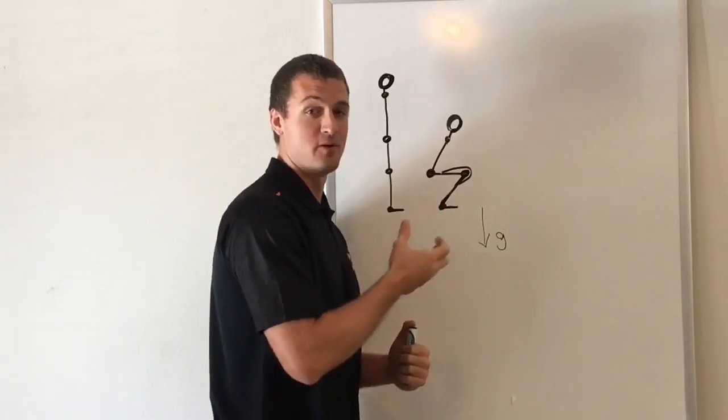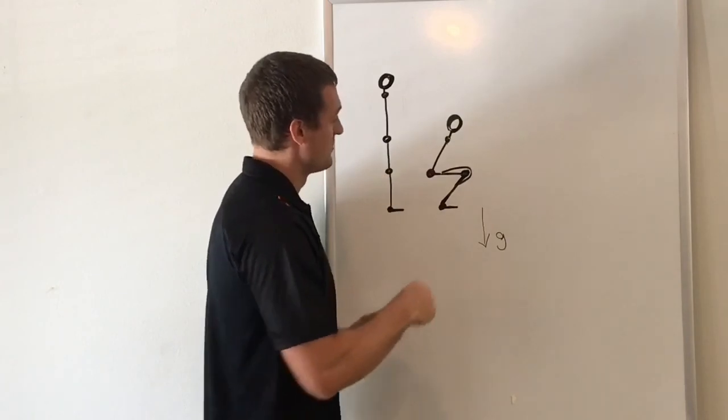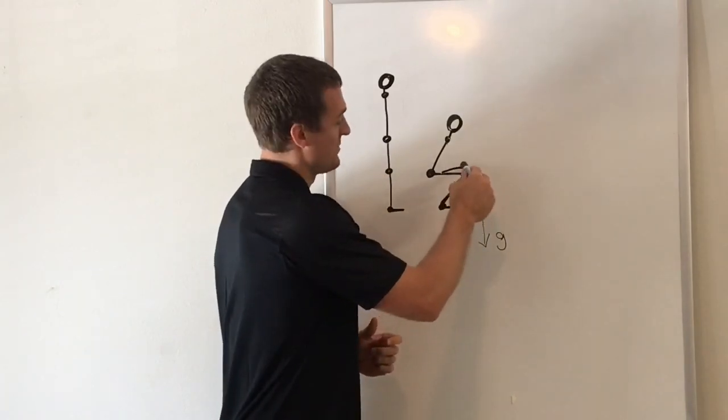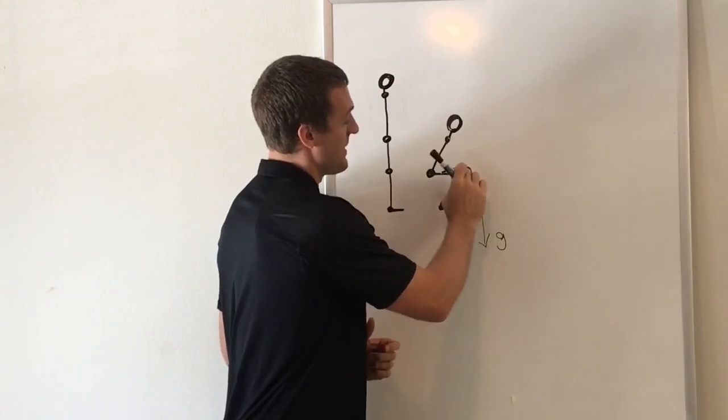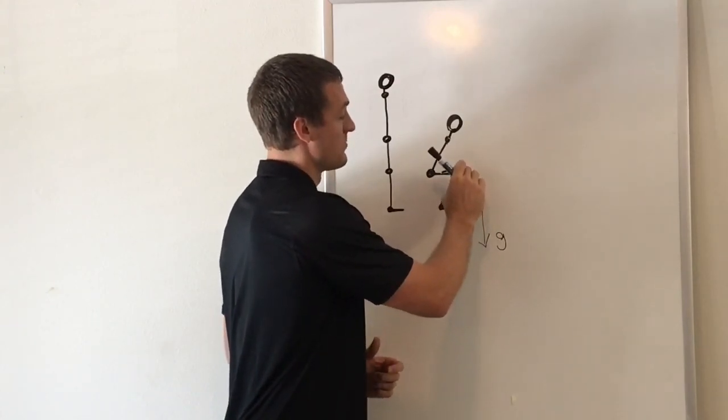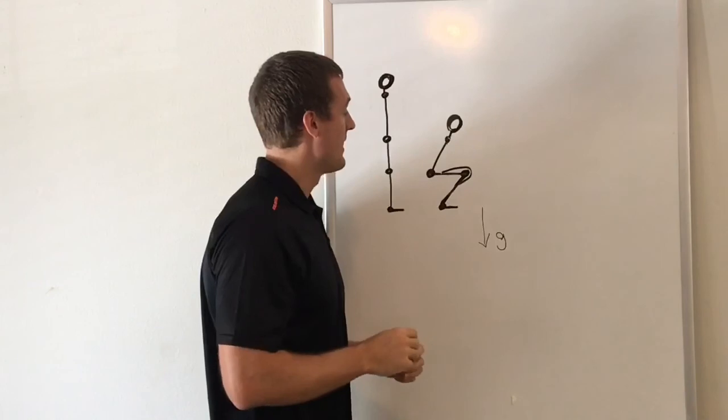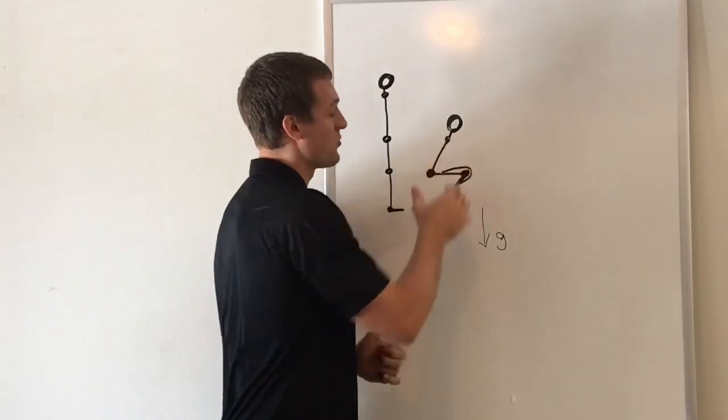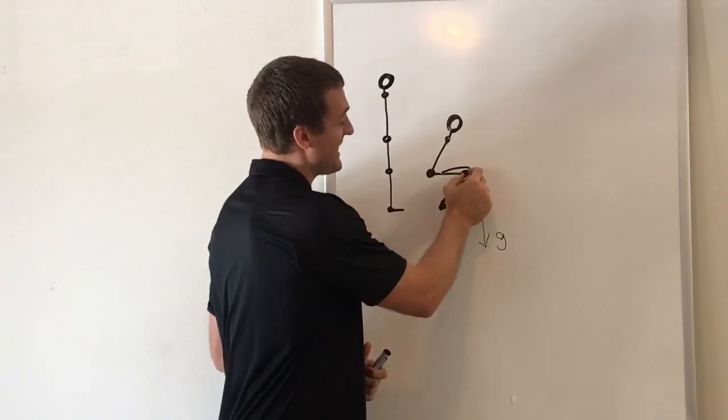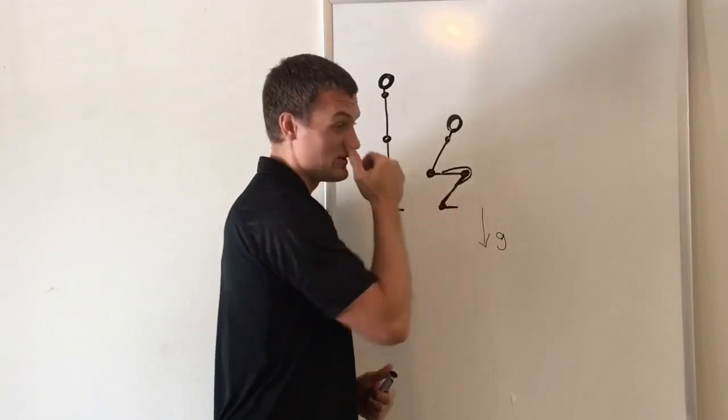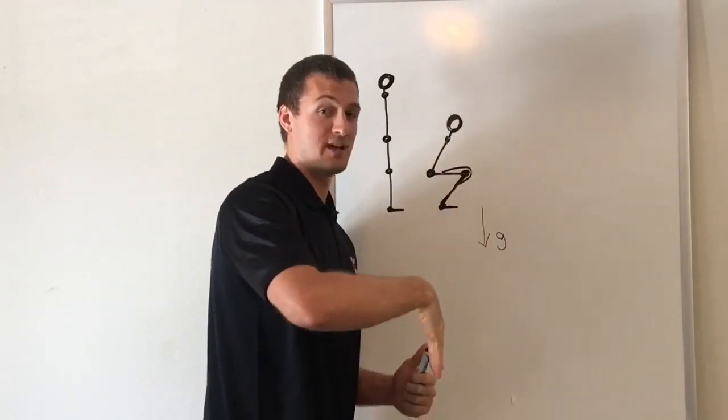Then we also have changing angles of pull. So the quads, for example, wrap around the patella and that gives them a little bit more advantageous angle of pull. It gives them some more torque at the knee joint. However, as you stand up in a squat, your patella moves through your femoral groove and that actually changes the elevation here a little bit, changes the angle of pull of the quadriceps.